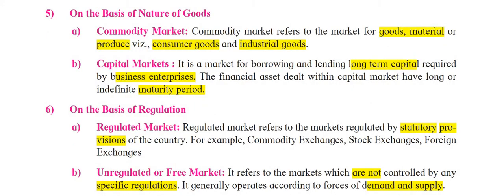The fifth classification is on the basis of nature of goods. Under this, the first one is commodity market. Commodity market refers to the market for goods, materials, or products — these can be consumer goods or industrial goods. This is a market where goods are produced or marketed, whether consumer goods or industrial goods. The second is capital markets.